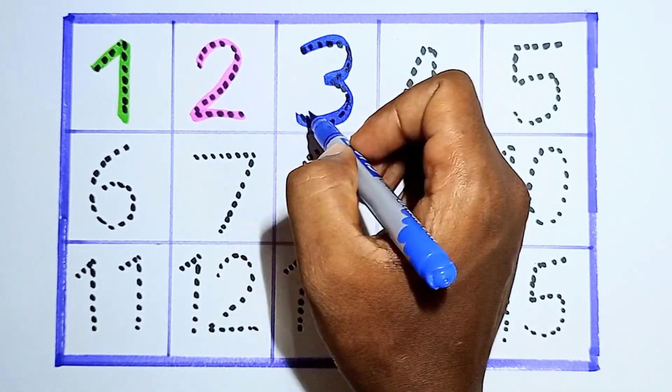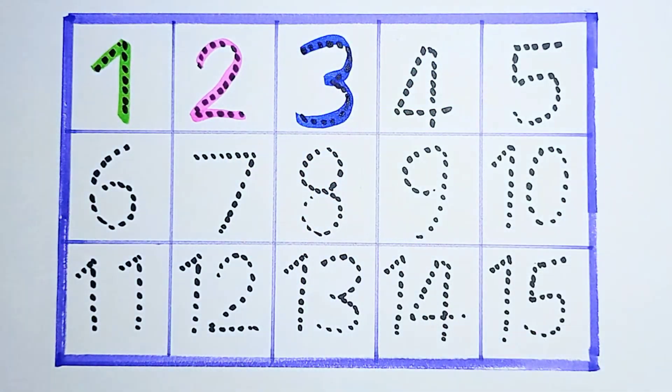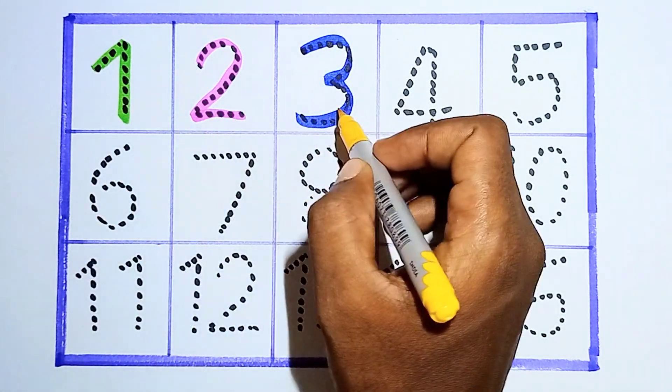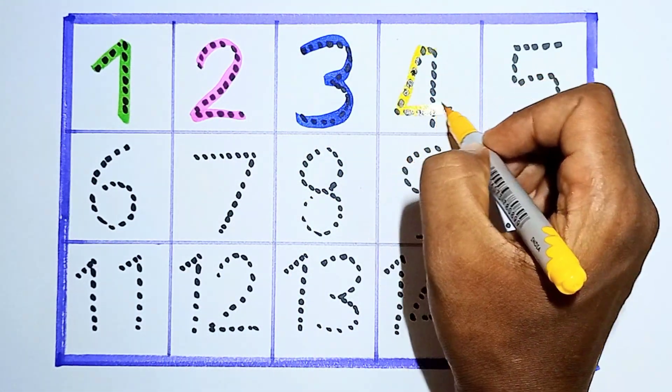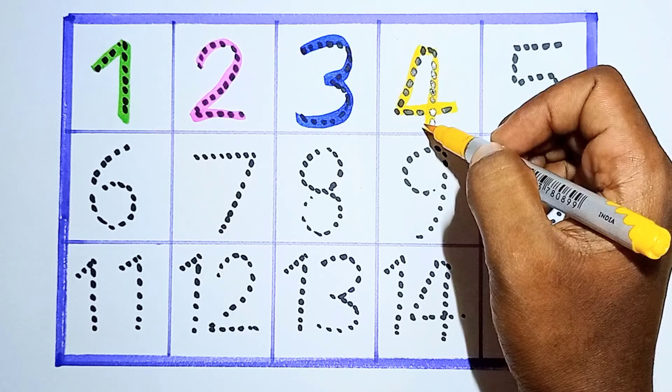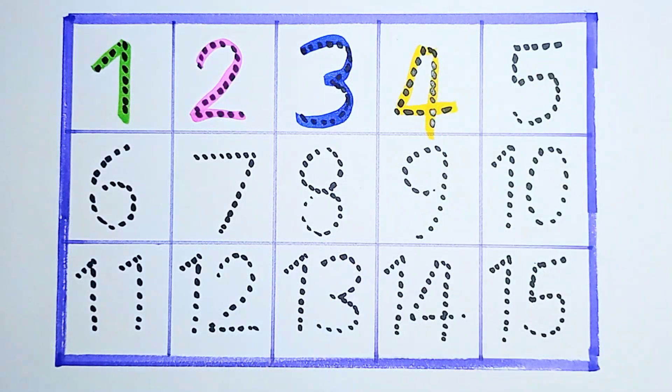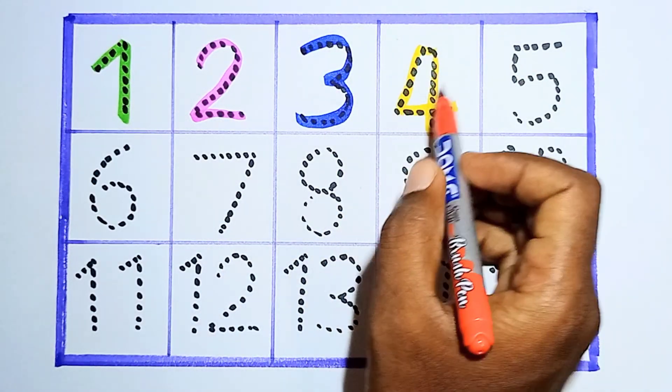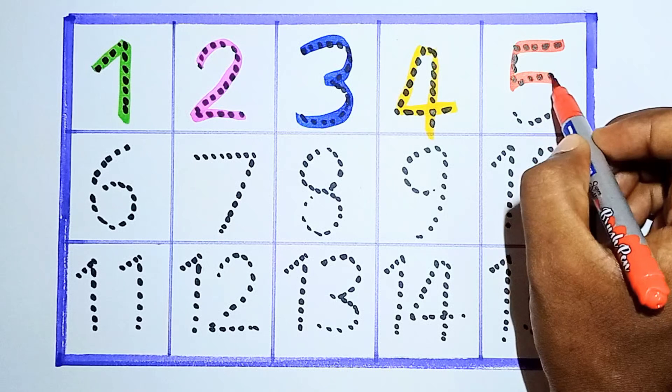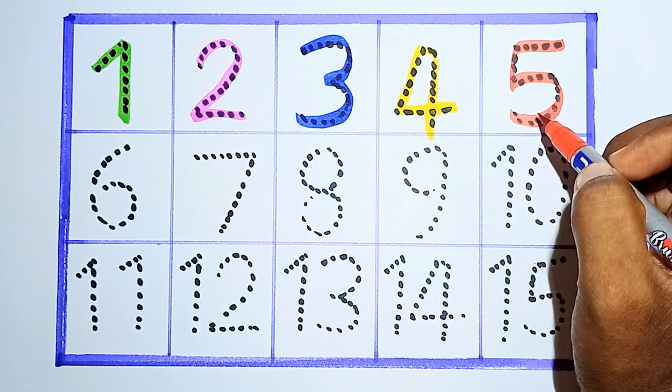3. This is number 3. 1, 2, 3. Next, 4. This is number 4. Next, 5. Number 5. This is number 5.